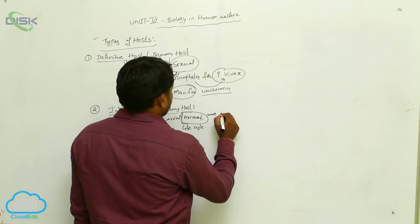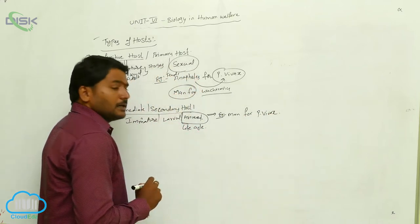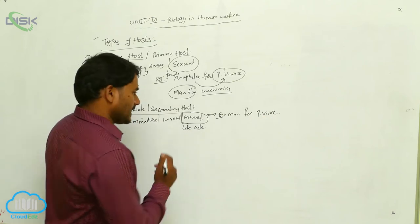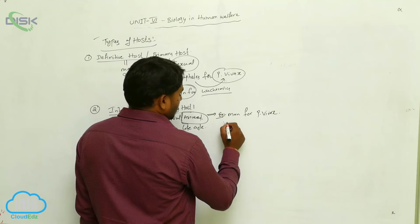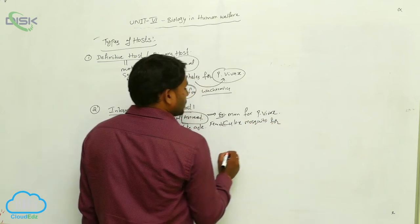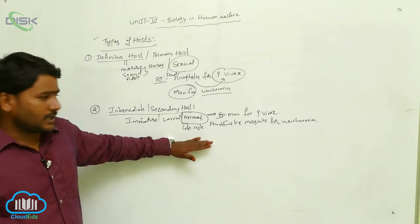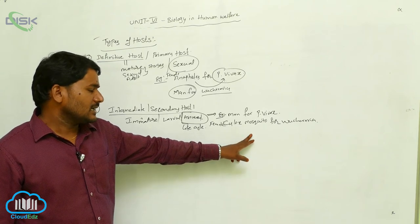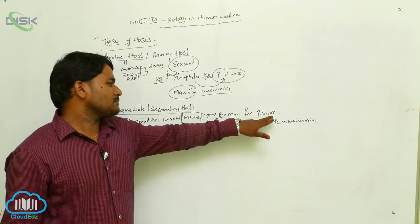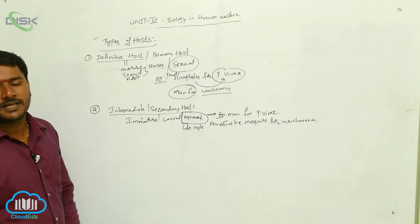For example, man is the intermediate host for Plasmodium vivax, because Plasmodium vivax completes its asexual life cycle in man. Also, the female Culex mosquito is the intermediate host for Wuchereria, because Wuchereria completes its asexual life cycle in the Culex mosquito. So, man and the female Culex mosquito are intermediate hosts or secondary hosts.